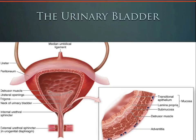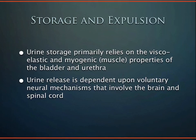The urinary bladder is an amazing organ capable of tremendous expansion and contraction. The bladder muscle is called the detrusor — smooth muscle that responds to the autonomic nervous system and involuntarily contracts. Urine storage and expulsion involve a complex extrinsic neural regulation mechanism. Storage relies on the elastic and muscular properties of the bladder and urethra, while release depends on voluntary neural mechanisms controlled by the brain and spinal cord.